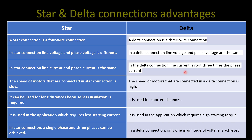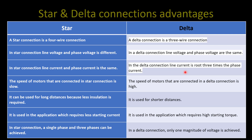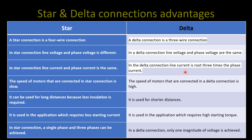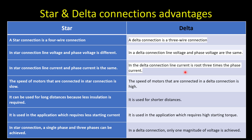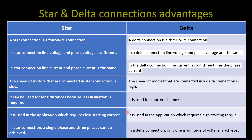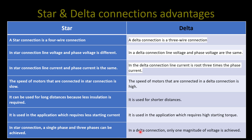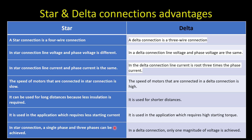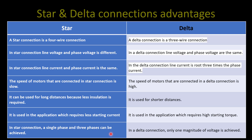Comparing star and delta connection: star connection is a four-wire connection; delta connection is a three-wire connection with no neutral. In star connection, line voltage and phase voltage are different; in delta connection they are the same. In star connection, line current and phase current are the same; in delta, line current is root 3 times the phase current. Speed of motors connected in star is low; in delta it is high. Star is used for long distance because less insulation is required; delta is for shorter distances. Star is for applications requiring less starting current; delta requires high starting current. In star, both single-phase and three-phase voltages can be achieved; in delta only one voltage magnitude is available.